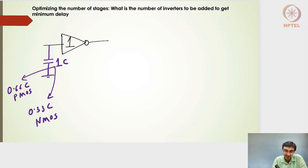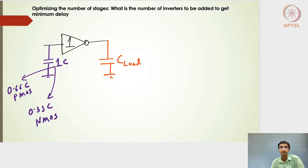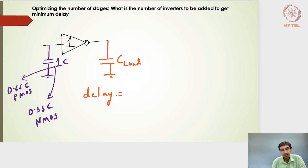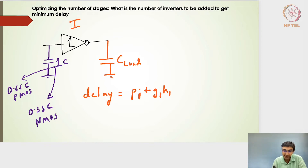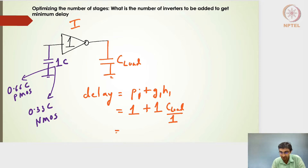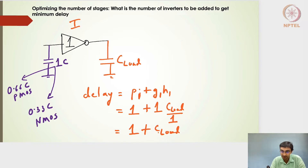This inverter sees some load capacitance C_load. The delay for this one stage is P1 + G1·H1, which equals 1 (parasitic) + 1 (logical effort) × C_load/1, so the delay is simply 1 + C_load. Since the size is already given as 1, the delay will always be 1 + C_load.